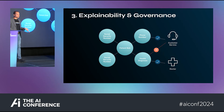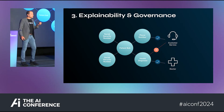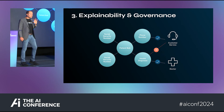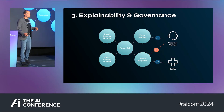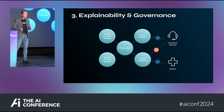The third benefit is explainability and governance. On the governance side, the graph gives you hooks through which you can apply fine-grained access controls — which is a real challenge with LLMs and vectors. On the explainability side, to the degree that I feed a graph to the LLM that has the answer or has input into the answer, I get either a white box or a gray box.